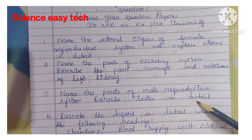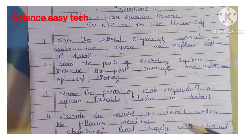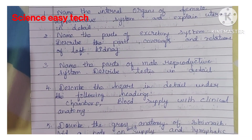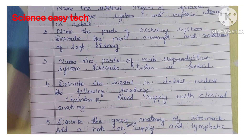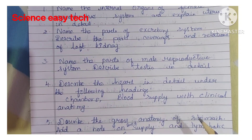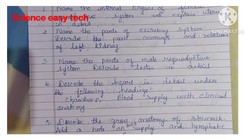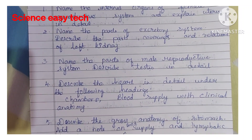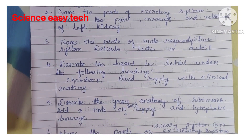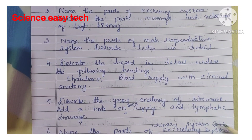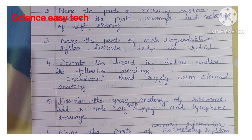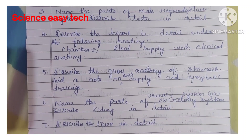Third question, name the parts of male reproductive system and describe testes in detail. Fourth question, describe the heart in detail under the following headings — heart chambers and blood supply to heart with its clinical anatomy. Fifth question, describe the gross anatomy of stomach and add a note on its blood supply and lymphatic drainage.